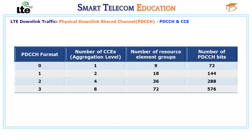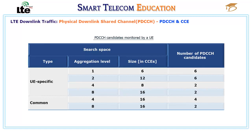There are 4 PDCCH formats available. The eNodeB uses the PDCCH for sending control information for a particular UE or a group of UEs, including some broadcast information common to all UEs. To manage this, the eNodeB divides its CCEs into two parts called search spaces. UE-specific search space: CCEs belonging to the UE-specific space are used for sending control information for a particular UE only, meaning information on UE-specific CCEs can only be decoded by that specific UE.